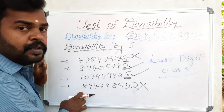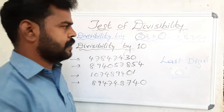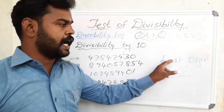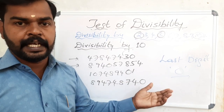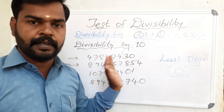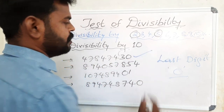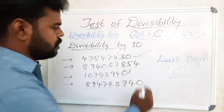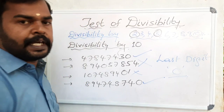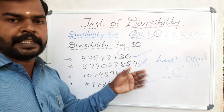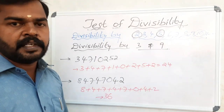Next, divisibility by 10. We should see only the last digit. If it is 0, then the whole number is divisible by 10. If any digit other than 0 appears, then we cannot divide by 10. First number: last digit is 0, so divisible by 10. Next: last digit is 4, not possible. Next: last digit is 1, not possible. Last number: last digit is 0, so divisible by 10.